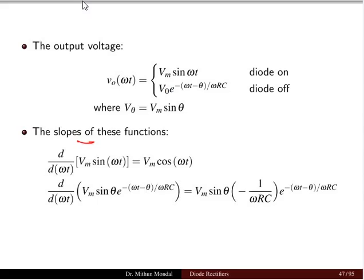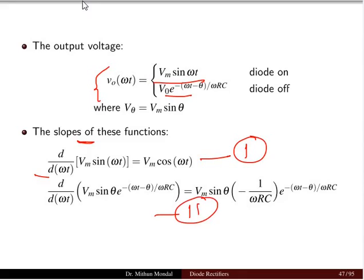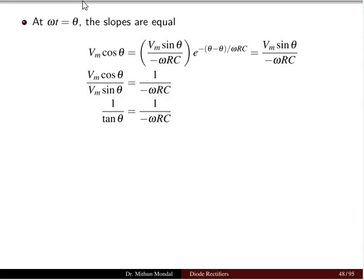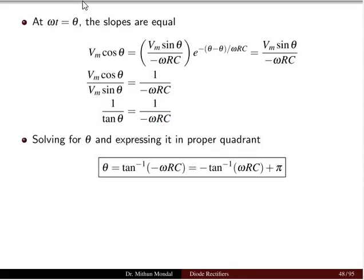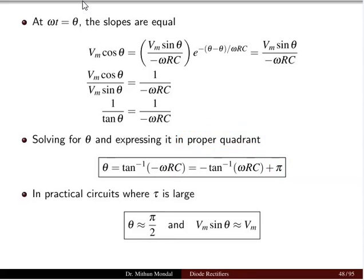If we equate the slopes of these functions by differentiating Vm sin(ωt) and the exponential with respect to ωt, these slopes are equal at ωt = θ where the voltage begins decreasing. After mathematical manipulation, we get θ = tan⁻¹(−ω/RC). To set it in the proper quadrant we add π, giving θ = π − tan⁻¹(ωRC).